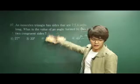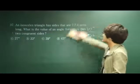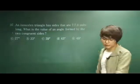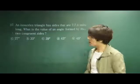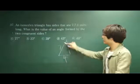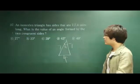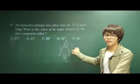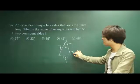Problem 37: An isosceles triangle has sides 7, 7, and 4 units long. What is the value of the angle formed by the two congruent sides? To find the angle alpha, we've got to use the law of cosines.